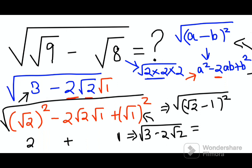So now when you take the square roots, you will either get positive root 2 minus 1, or you will get negative root 2 minus 1. Now if you see root 2, root 2 is 1.414. So when you subtract 1 from it, you will get a positive answer.